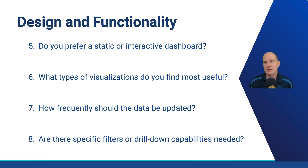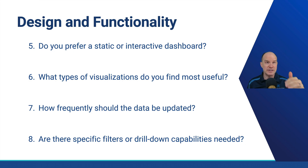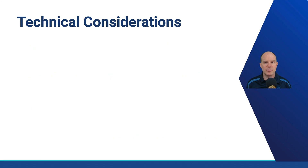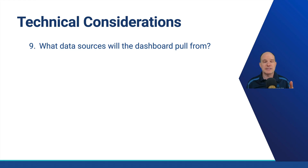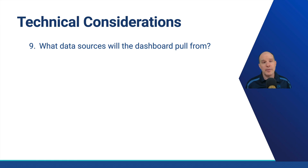Are there specific filters or drill-down capabilities needed? If you want to interact with it, you might want to pick a certain salesperson, a certain time frame, a certain category or type. Now the technical considerations: what data sources will the dashboard pull from? Is it going to be exclusively from FileMaker Pro, or will we be interacting with data from Claris Studio? Will we need Claris Connect to help us populate data from external sources? Will we be interacting with an API from a third party or a combination?